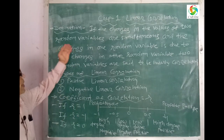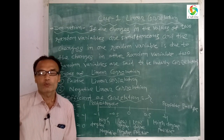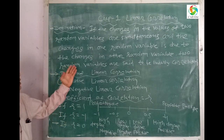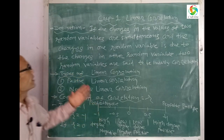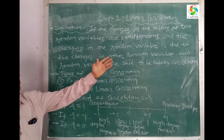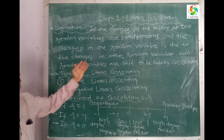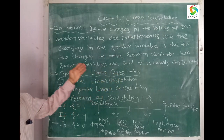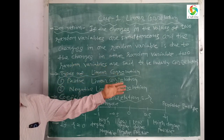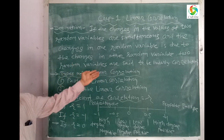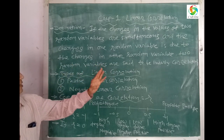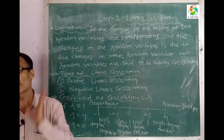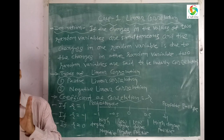First, the definition of linear correlation. We will learn that if the changes in the values of two random variables are simultaneous, and the change in one random variable is due to the change in the other random variable, then the two random variables are said to be linearly correlated.